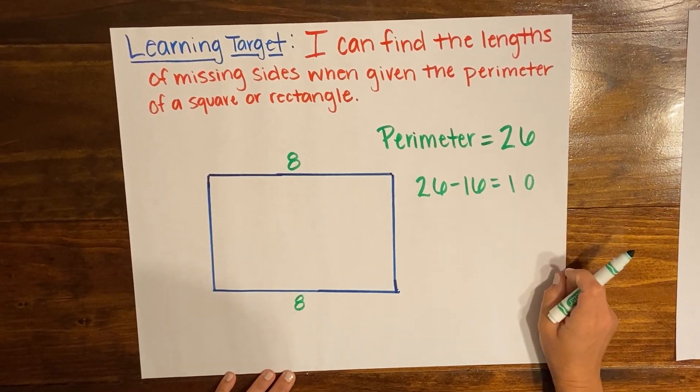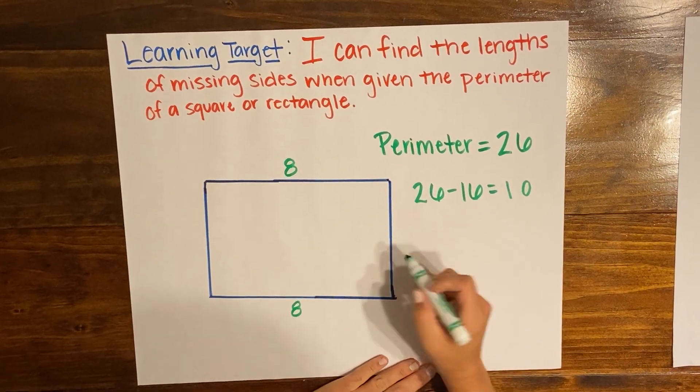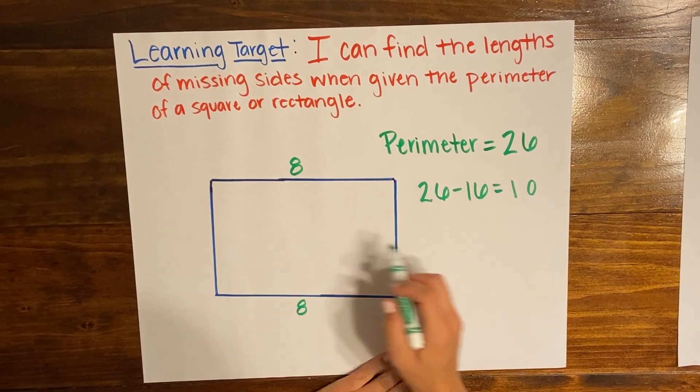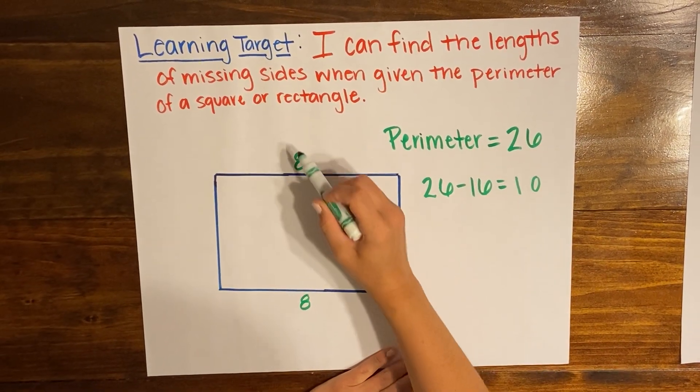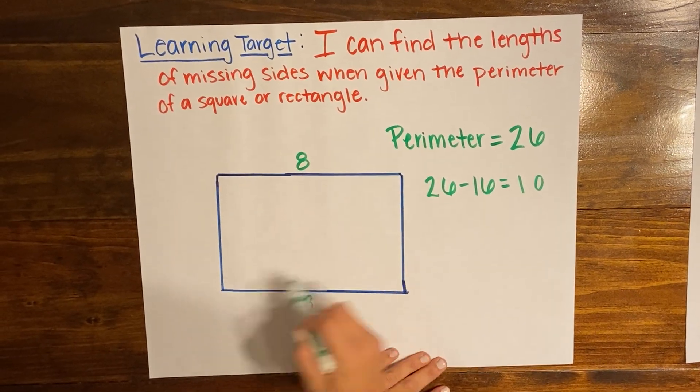So I know that these two sides together have to equal 10 because that's how many more I would need after I take away the 16 from these two sides.